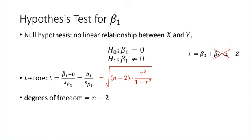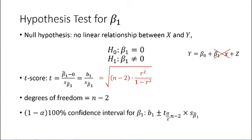Similarly, a confidence interval for beta1 can be obtained as b1 plus or minus the t-value of half alpha with n minus 2 degrees of freedom times the sample standard deviation of beta1 hat.